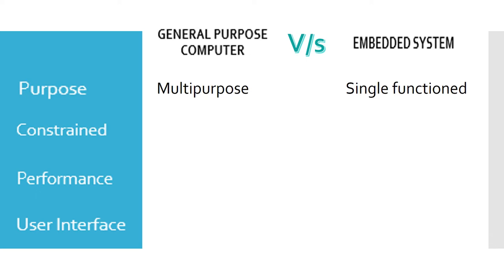General purpose computers are built to be customizable in software, like a desktop PC or a laptop — you can make it to do many things. While a general purpose computer can be used for multipurpose, an embedded system is only meant for a single purpose. For example, you cannot take out the hardware of a washing machine and program it to work as a microwave oven.